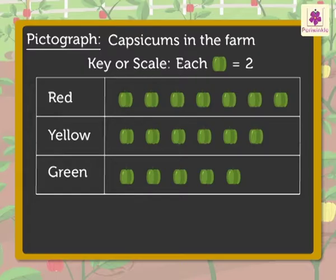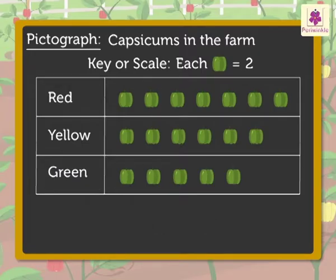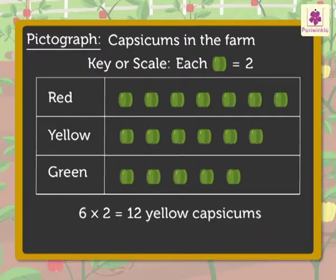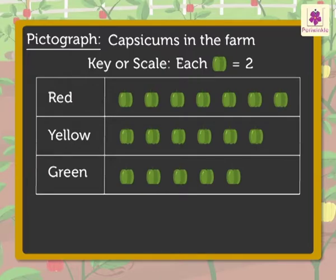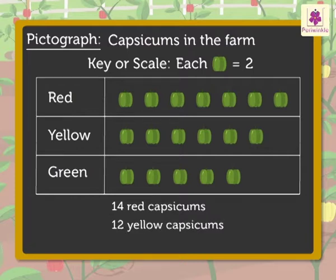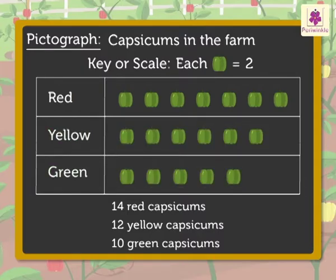So, let's count the number of capsicums in the farm. There are seven red capsicums — that means seven multiplied by two is equal to 14 red capsicums. Accordingly, we can find out the yellow and green capsicums. There are 12 yellow and 10 green capsicums on the farm. Hence, from the pictograph, we can say there are 14 red capsicums, 12 yellow capsicums, and 10 green capsicums. From this information, we can say how many capsicums there are in all, whether red capsicums are more or yellow, and so on. Hence, we can obtain a lot of information from a pictograph.